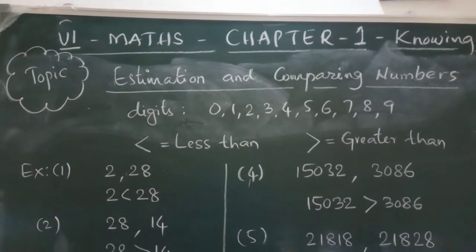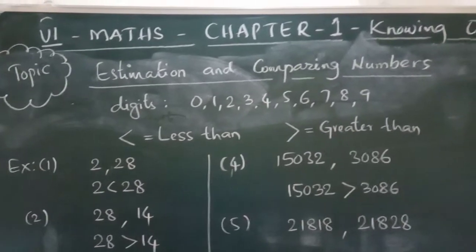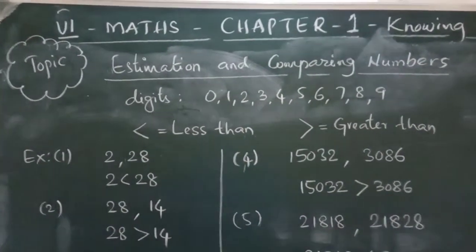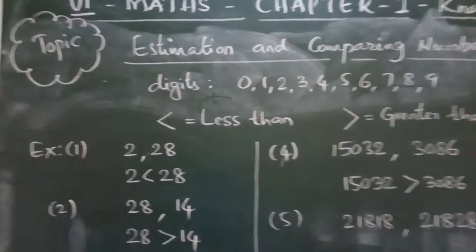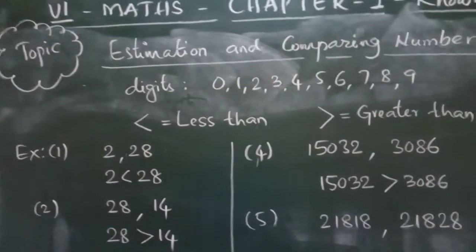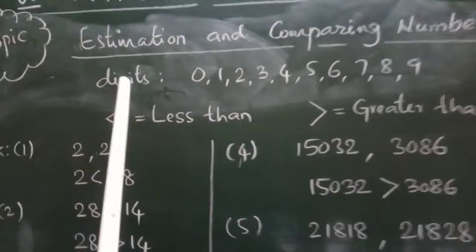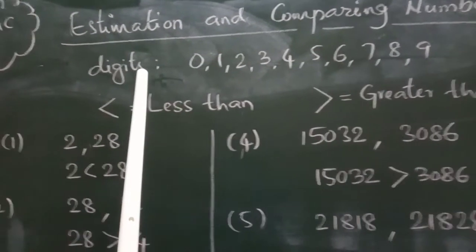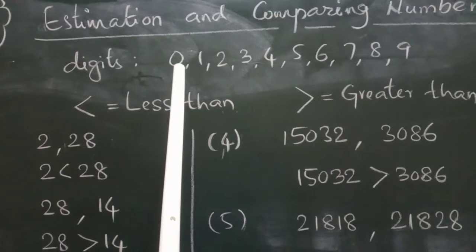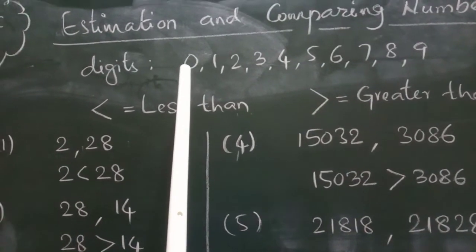Today we are going to know chapter 1, Knowing Our Numbers. In this chapter, the main topic is estimation and comparing numbers. You know, these are called digits. These are a total number of 10 digits, including 0.